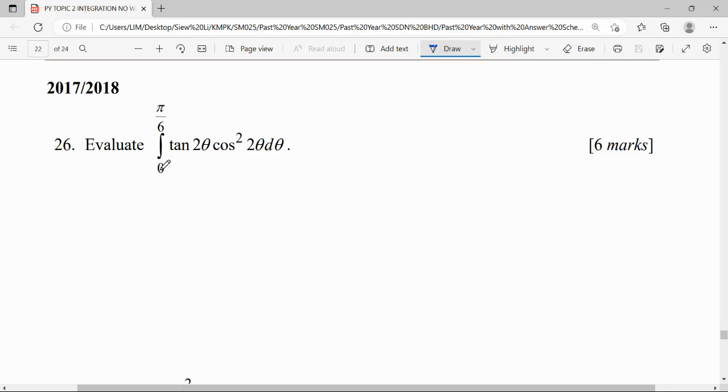We're going to evaluate the integral from 0 to π/6 of tan(2θ)cos²(2θ) with respect to θ. For this question, we can simplify the tangent first.